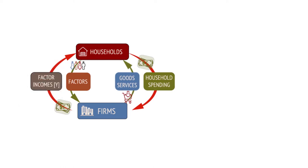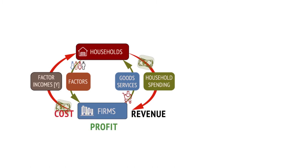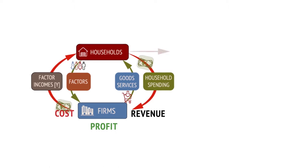Consumer demand is met by firms as they produce an output of goods and services. The firms receive an income in the form of revenue. With this income, firms pay for the factors they use. Hence the circular flow of income and spending between households and firms is complete. Or is it?